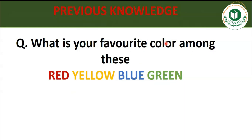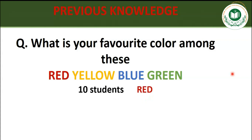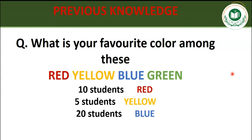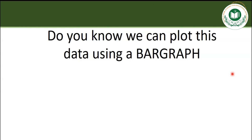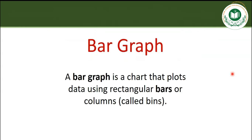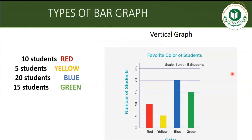What is your favorite color among red, yellow, blue, and green? Ten students raised their hands for red, five students like yellow, 20 students have blue as their favorite color, and 15 students have green as their favorite. Do you know we can plot this data using a bar graph? A bar graph is a chart that plots data using rectangular bars or columns — these bars are also called bins.